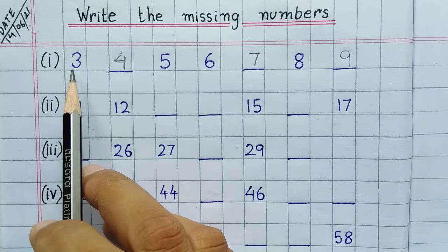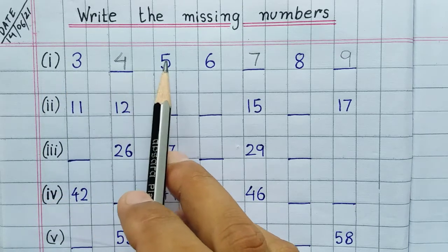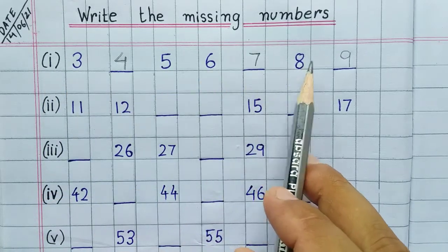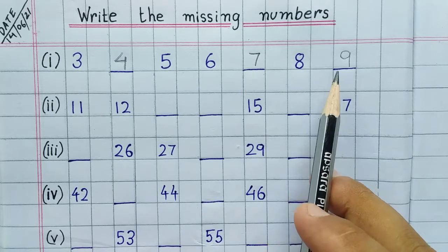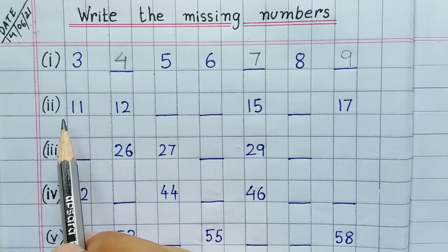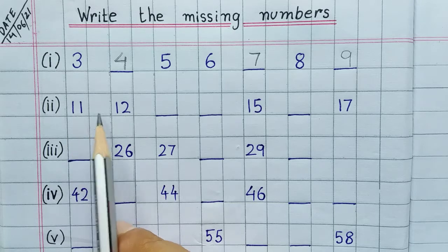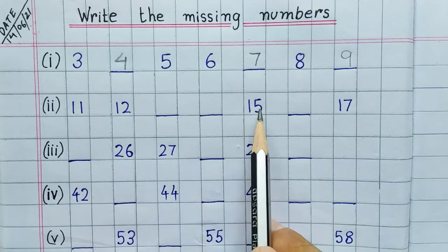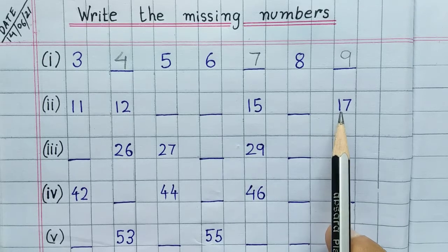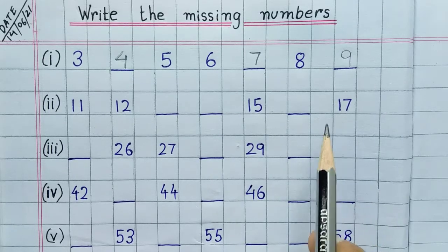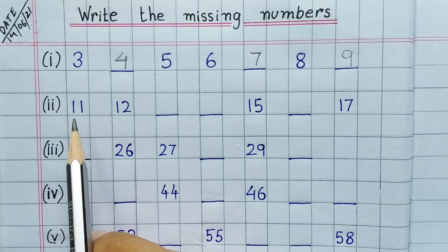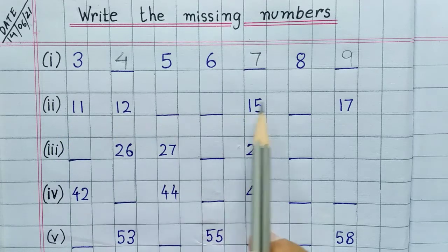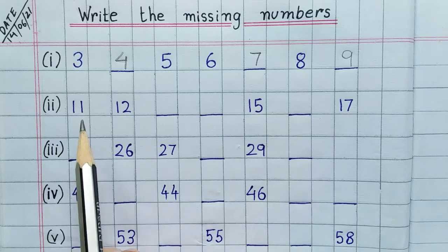Now let us look at question number two: eleven, twelve, dash dash, fifteen, dash, seventeen. Now here you can see that all the numbers are of two digits and they are all in increasing order.